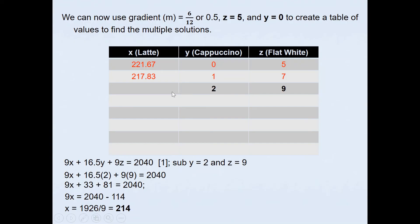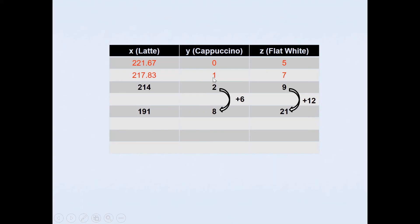Once I've got the first value, from here we can simply use the gradient value, the actual gradient value, not the simplified one. The actual gradient value says if the Y value goes up by 6, the Z value must go up by 12, so that all the possible solutions are on the straight line that we have there. If I'm increasing the Y value, if I just add 6, I will get 8, which should be our next solution. If I add 12 to 9, I will get 21. If I solve using the first equation, it gives me the value of 191. These are all whole number values, so this becomes our next solution.